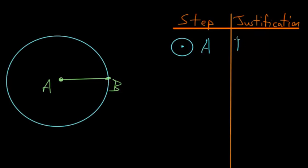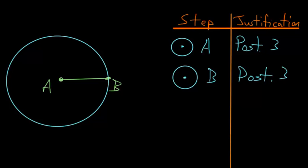Again, this comes from postulate number 3, and our next step is to do pretty much the same thing, but this time to make a circle with a center point at B, though using the same radius, this line AB. And this will also use postulate number 3.